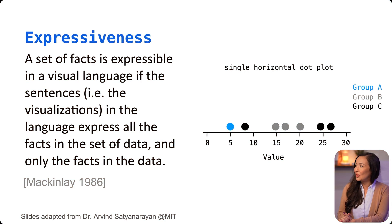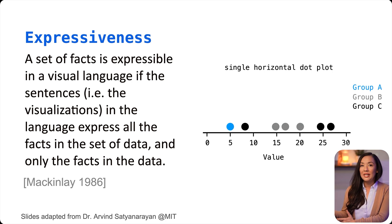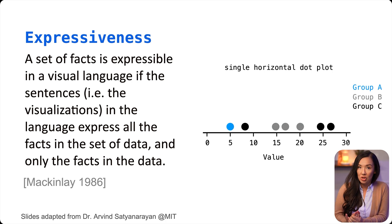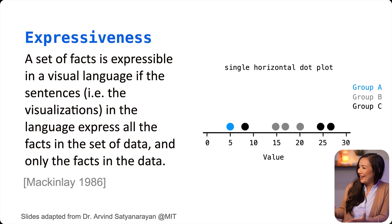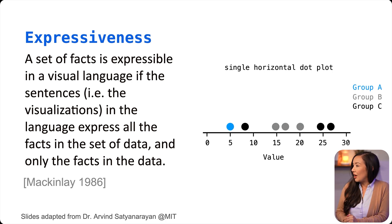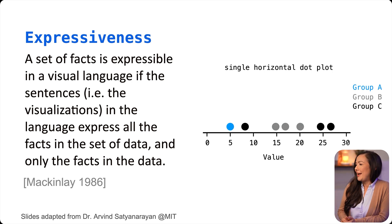Let's start with the single horizon dot plot. You might see a visualization like this and draw some conclusions. We are looking at dots that are color-coded by group. You might look at group A and say there's one dot for group A, three for group B and C. You might think that group A has lower values, whatever the values are in this case, and there's not much more you can draw from this visualization.